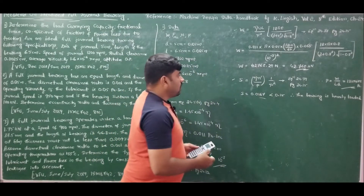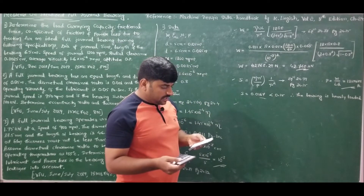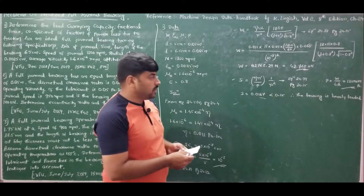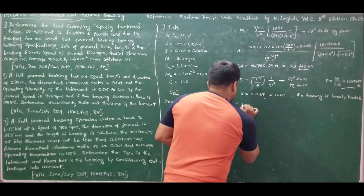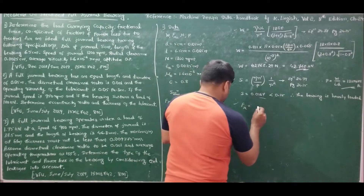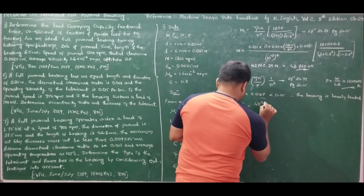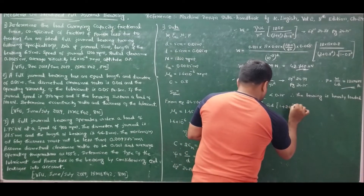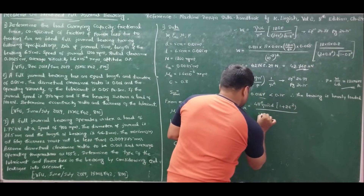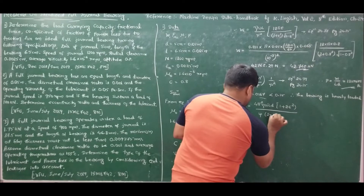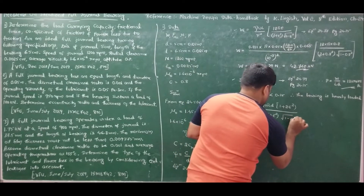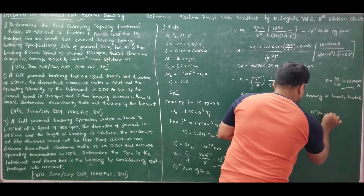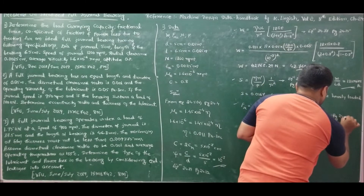We can also calculate the Sommerfeld number using the alternate equation 24.41, where S is a function of the eccentricity ratio only. Now, moving ahead to find the frictional force F_mu.